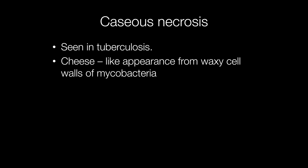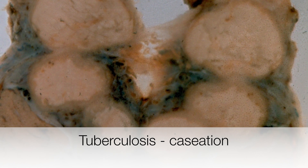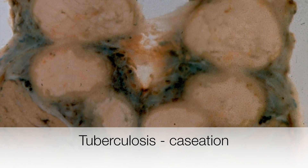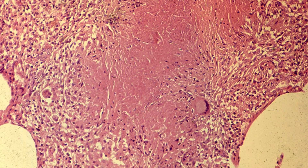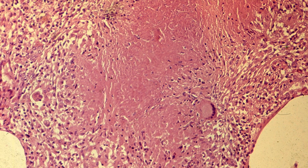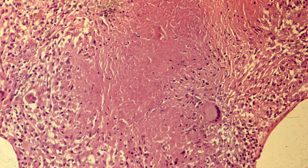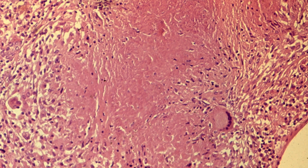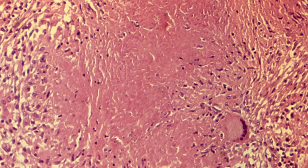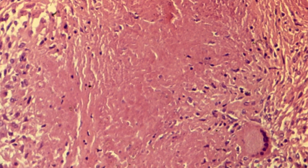TB causes a special type of necrosis called caseous necrosis, or caseation. Here you can see tuberculosis of the epididymis with caseation in the epididymis. This is the histological appearance of caseation under a microscope — this is the amorphous pink area you can see at the centre of the picture.